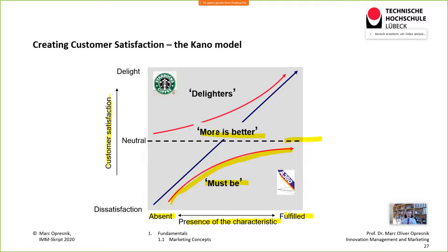The second dimension is 'more is better' — these are called proportional factors. The better you deliver on those, the higher customer satisfaction becomes, hence the proportional slope. The third and most interesting dimension is 'delighters' — factors that are not articulated by customers, but if you deliver on them, extreme satisfaction is created beyond what customers expected.